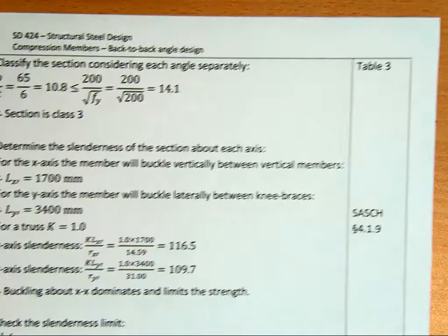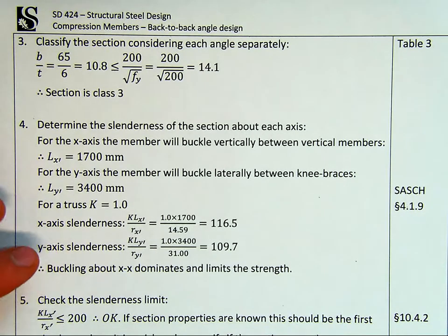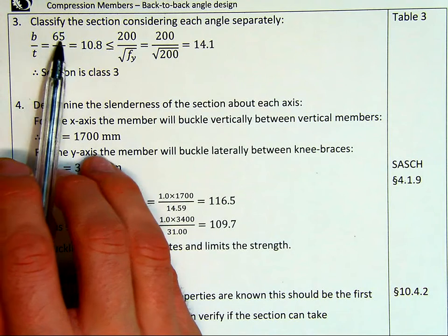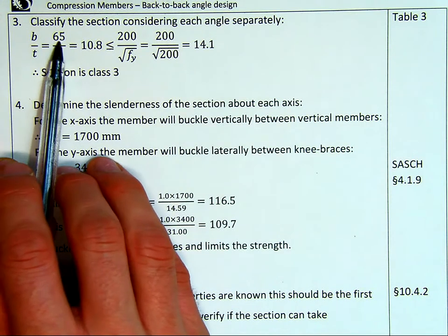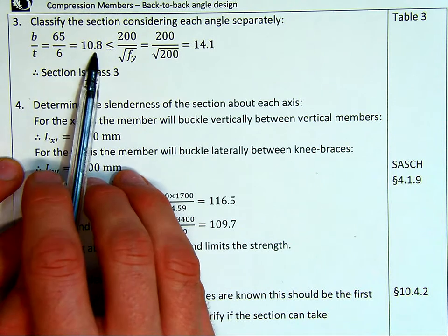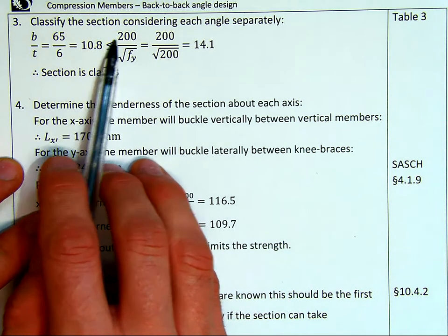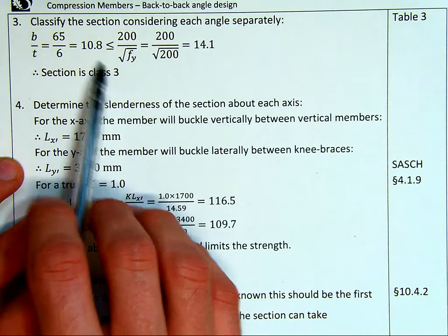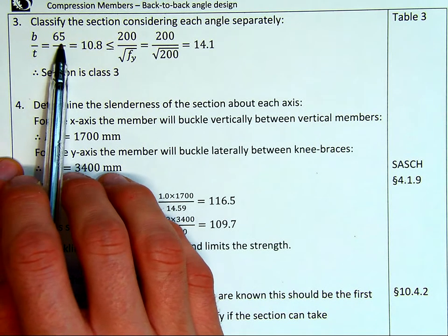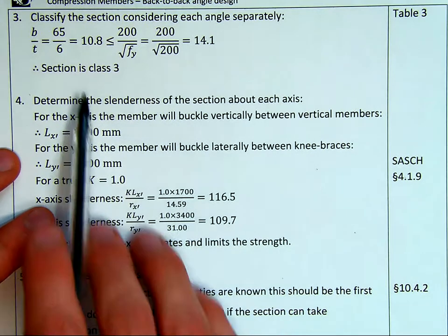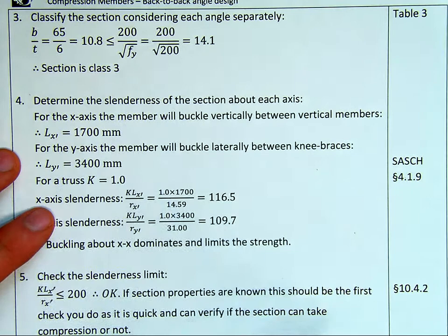Then once we have those values, we can start calculating the section classification, determine if it is going to experience local buckling. Our breadth over thickness, I'm just only going to use the one. I'm taking the longest one and find that the total width over thickness, 10.8, this is less than our allowable limit. Therefore, it's a class three section. I could have checked the other one as well, the 50 mils. But if the 65 works, obviously the 50 will work. I now note section is class three, therefore it's not going to experience local buckling.